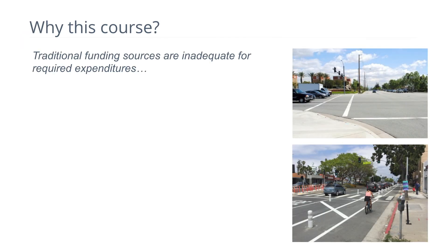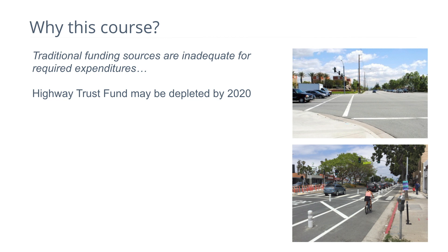So why this course? The traditional funding sources are inadequate for expected expenditures. The federal government has a highway trust fund into which gasoline tax revenues are placed and protected for transportation uses, and that has become depleted — subsidized by general tax revenues for a number of years. Gas tax revenue, a major source of revenue, is declining because of increasing fuel economy and the fact that it's not indexed to inflation.